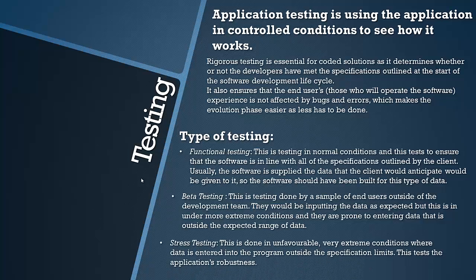The hardest test is probably stress testing, done in unfavourable extreme conditions where data is entered into the program outside of the specification limits. This can be done by anyone but usually the development team, who enter data the program hasn't been designed to deal with. The program should have been built to be robust — robustness is how well the program can deal with errors. These first two tests check things the program will deal with on a daily basis, whereas stress testing covers unusual cases but is still very important.